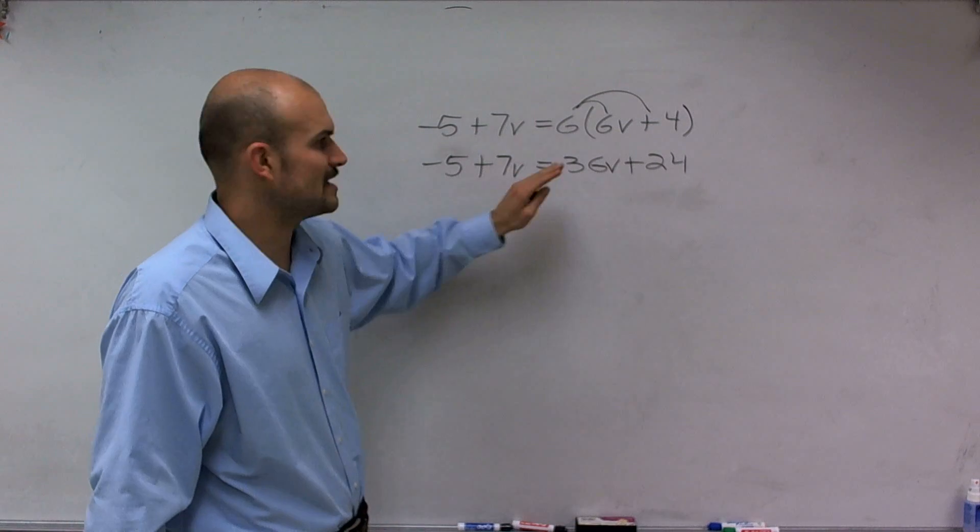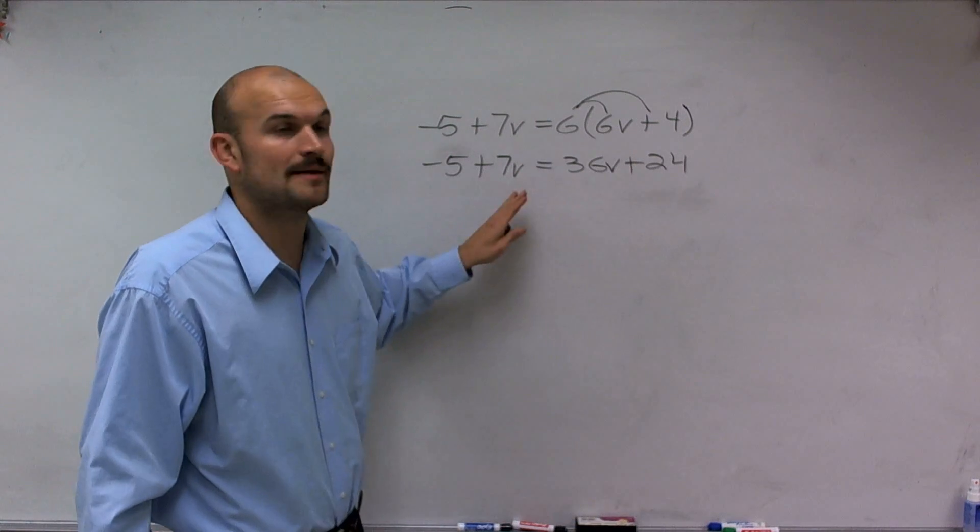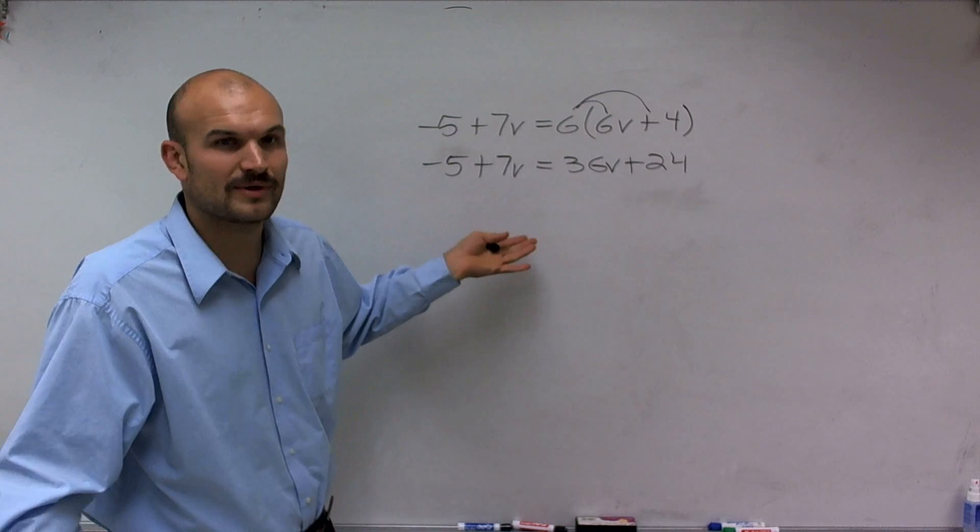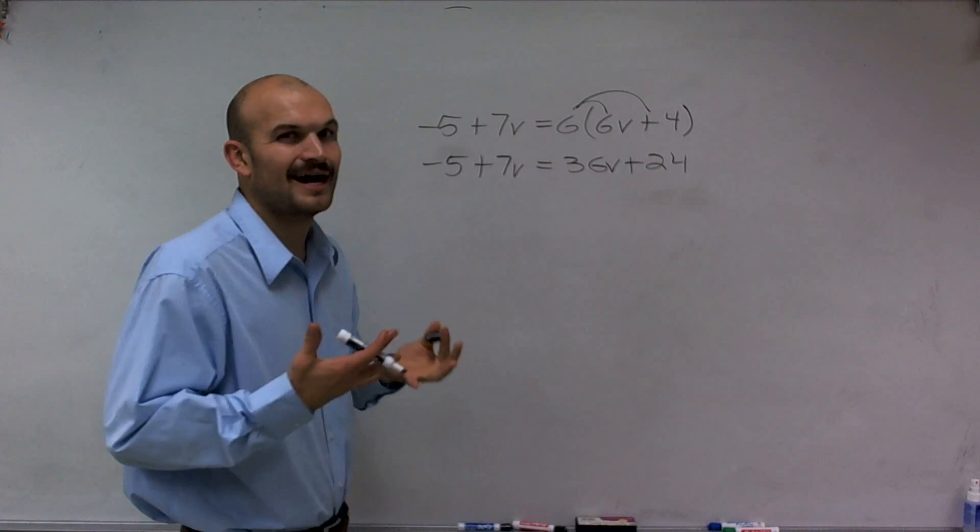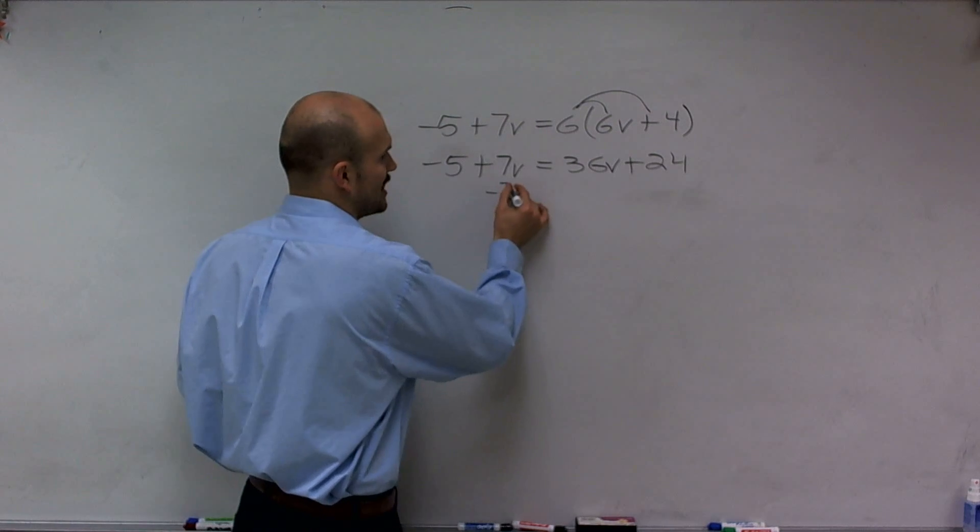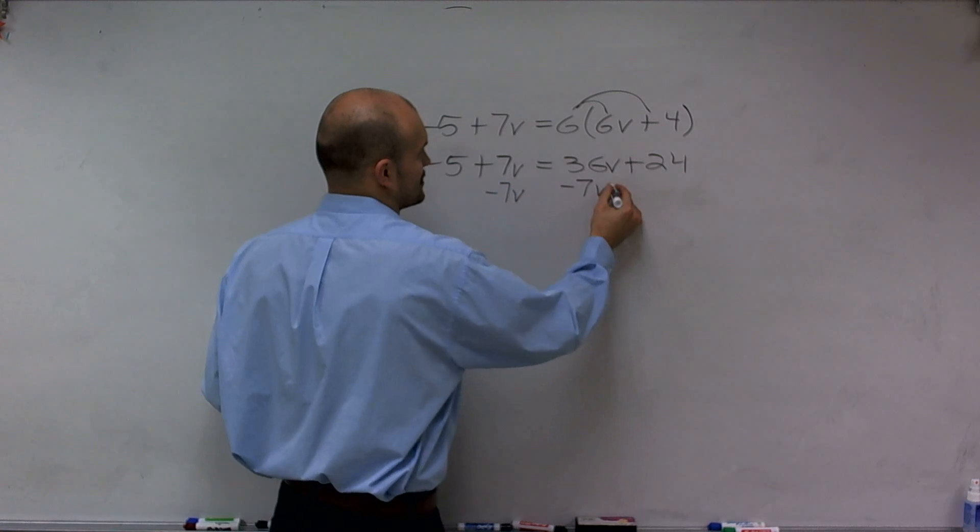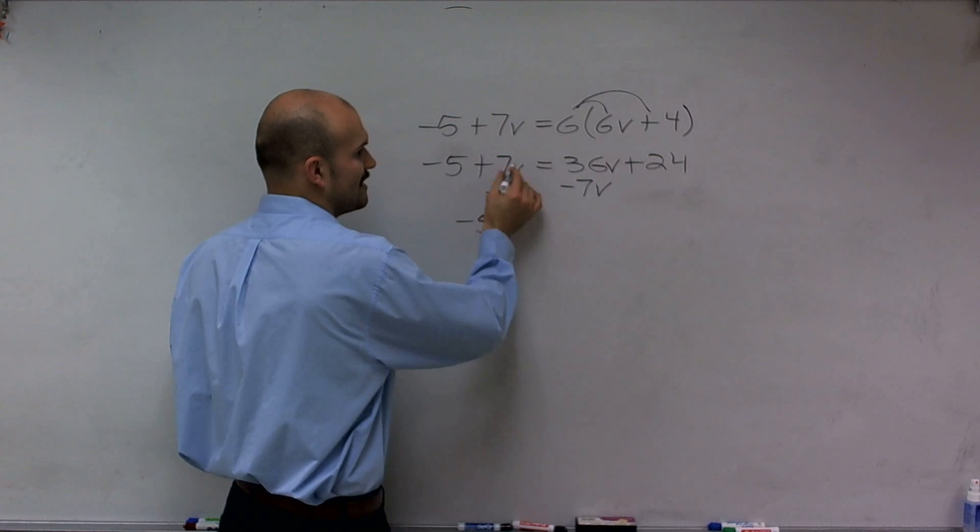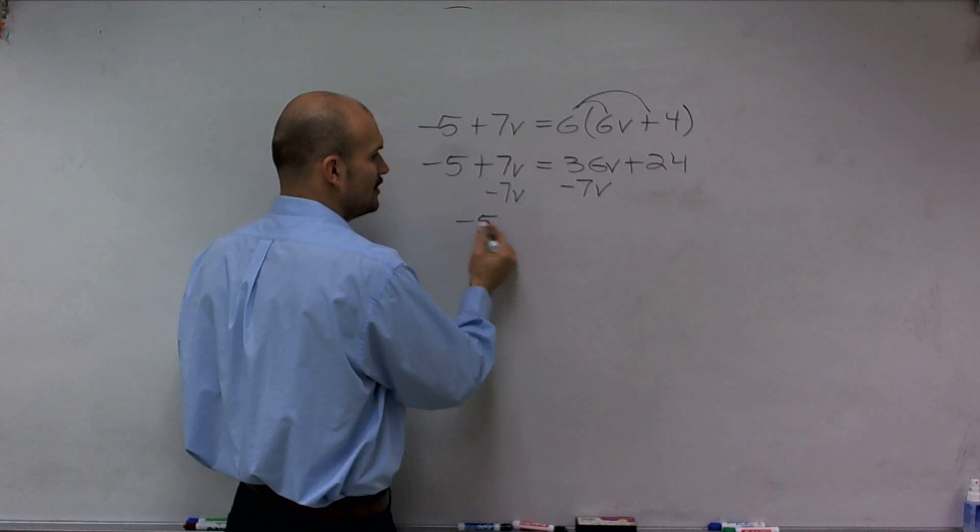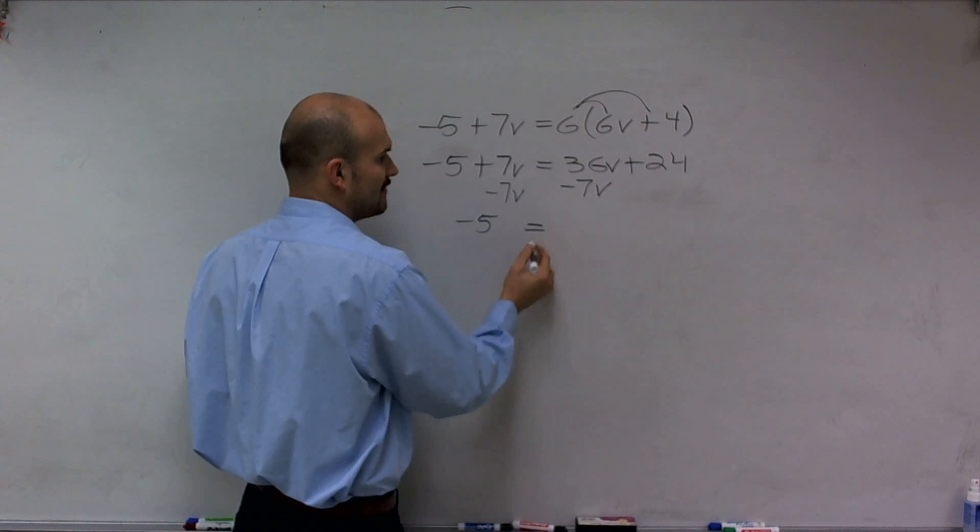However, you could also solve for v on the left side by subtracting 36v on both sides. However, then you'd be dealing with a negative number, which I don't want to deal with. So I'm going to subtract 7v on both sides. By doing that, 7v minus 7v is going to become 0v, which is 0. 0 plus negative 5 is just negative 5.